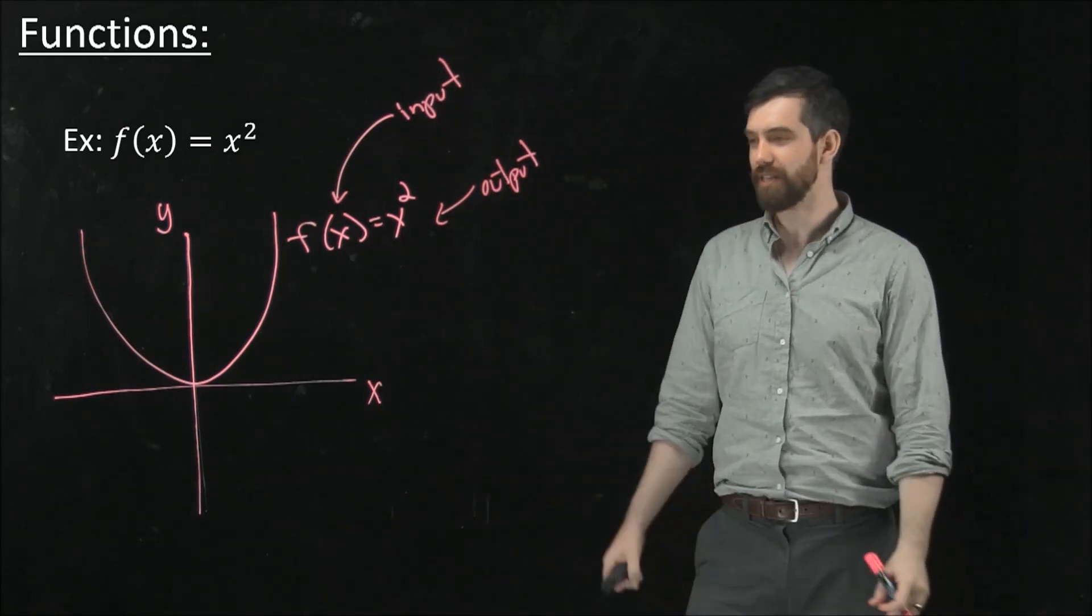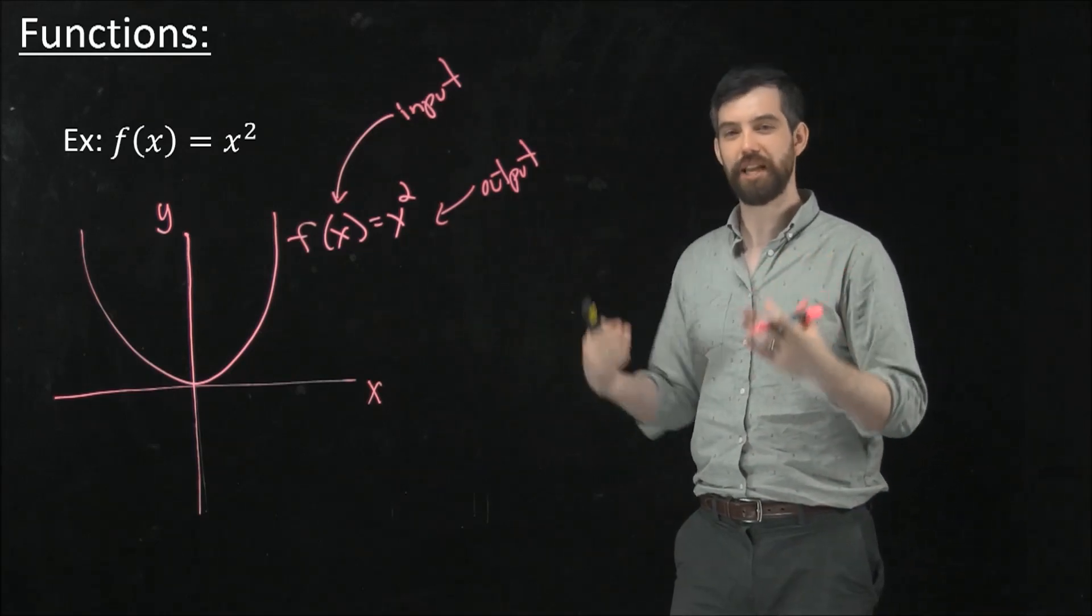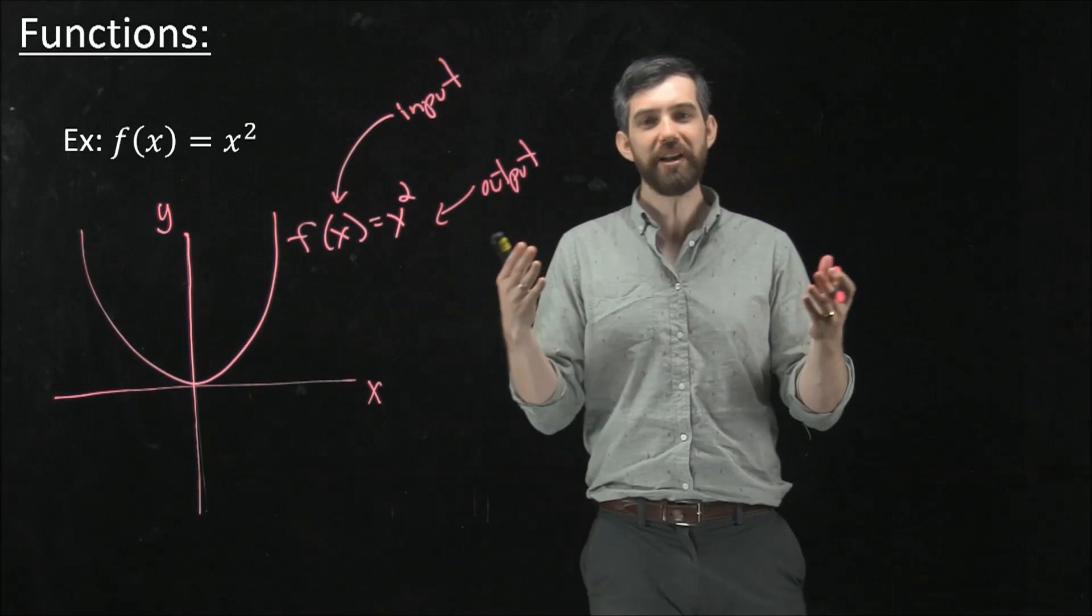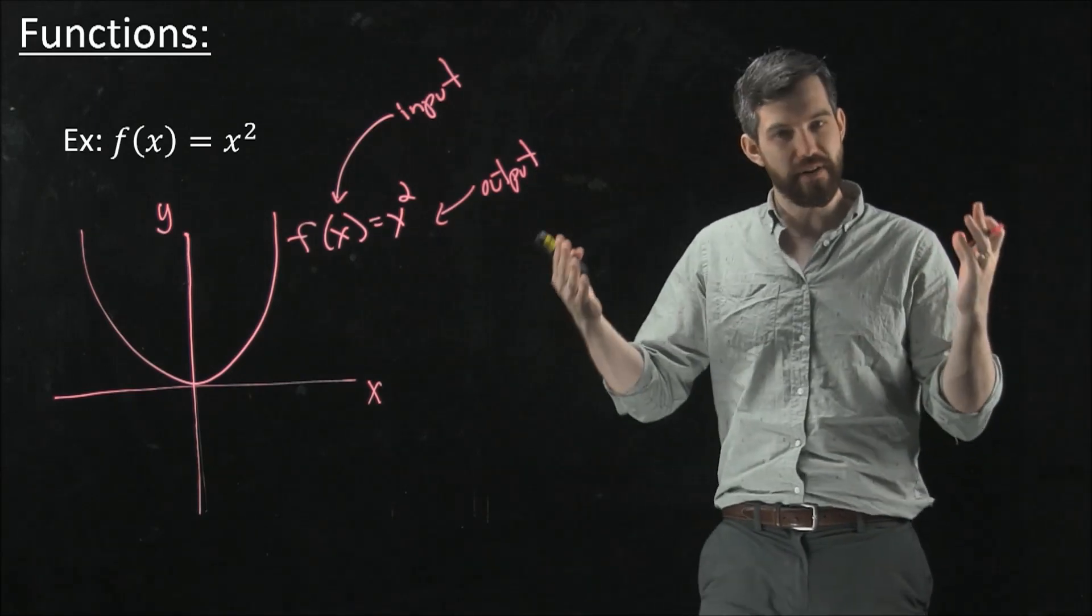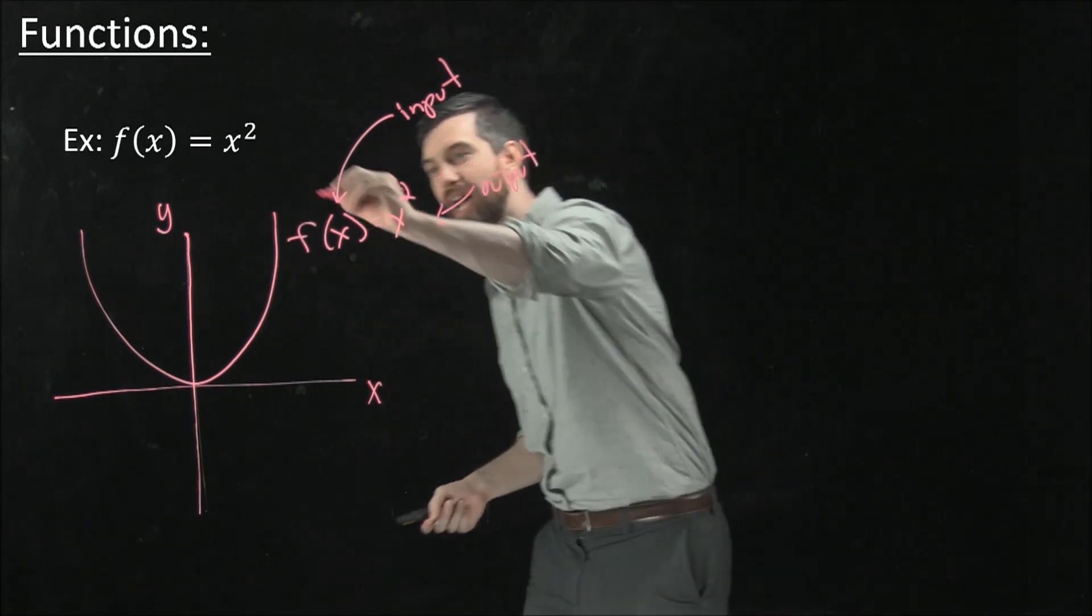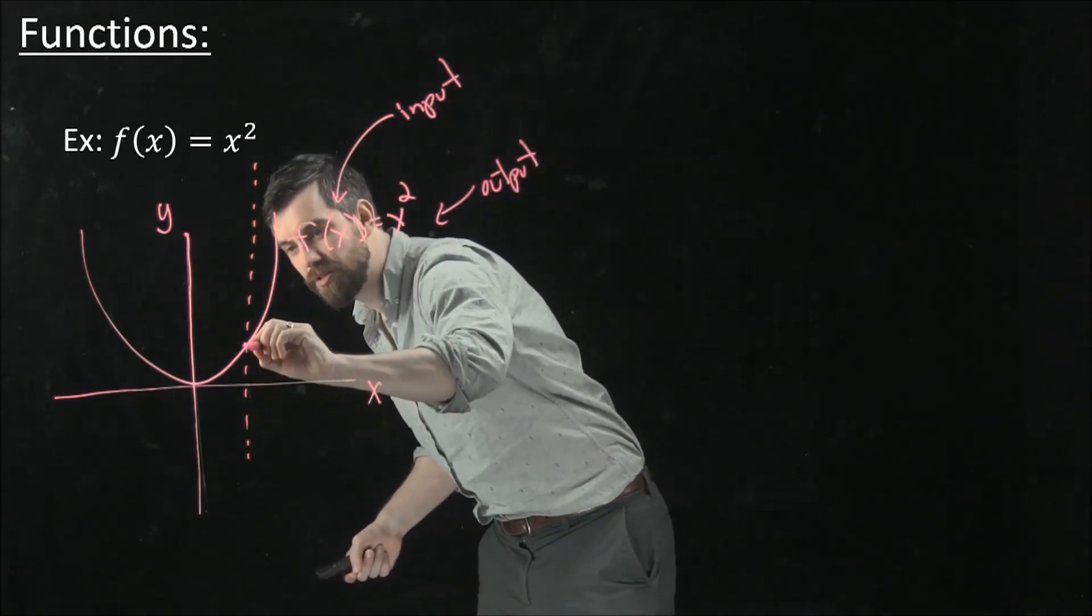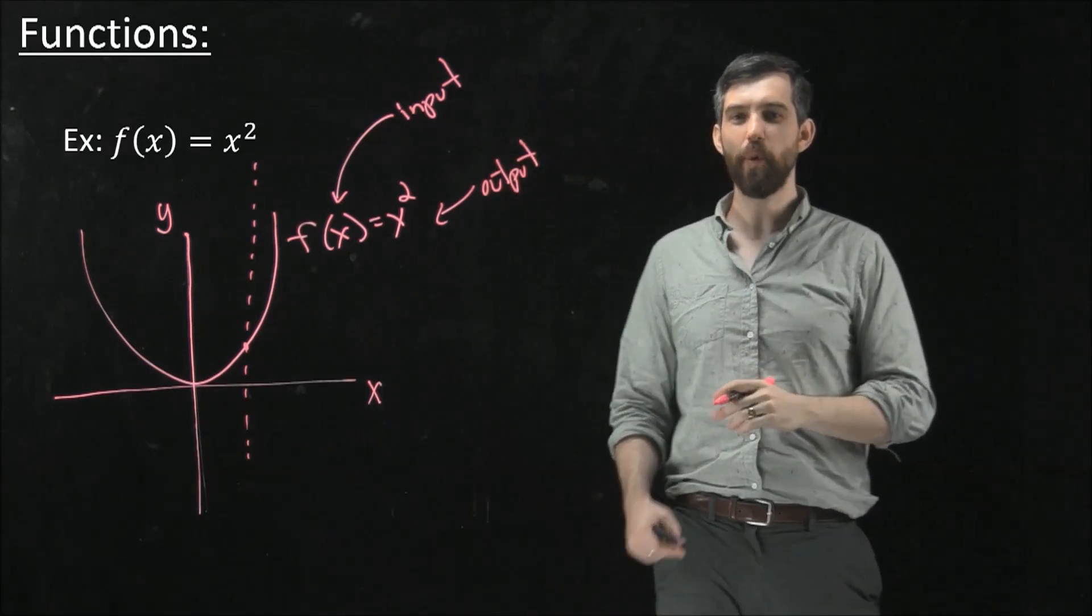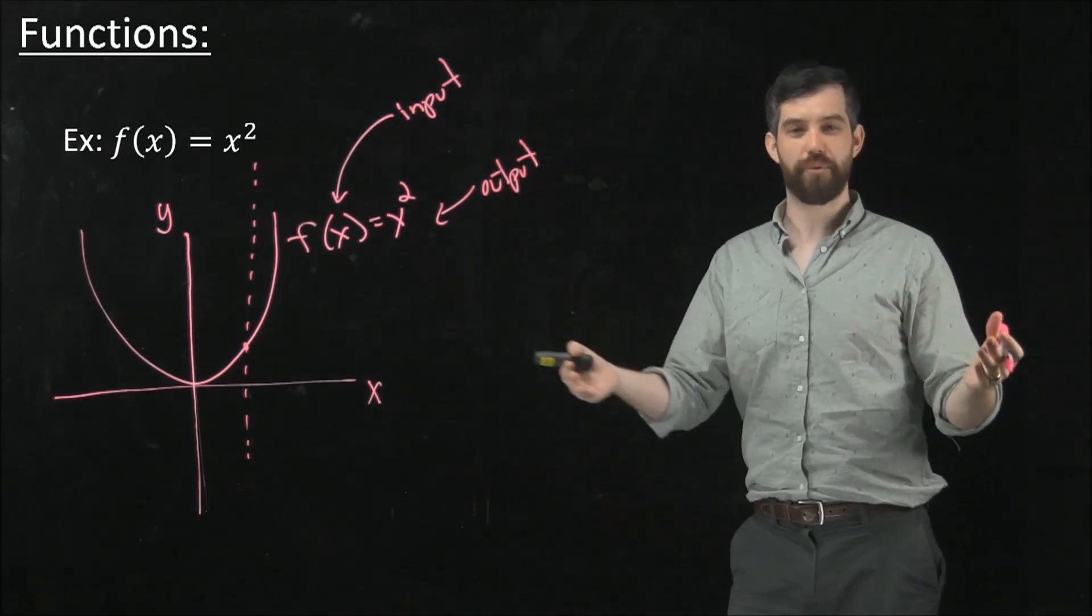So that is going to be my idea of a function. It's got this input and this output. Now, you might have recalled that to be a function, you have to pass something called the vertical line test, which this does. If I write my vertical line test, there's only a single intersection point here. So what was that about? Why was that a requirement?